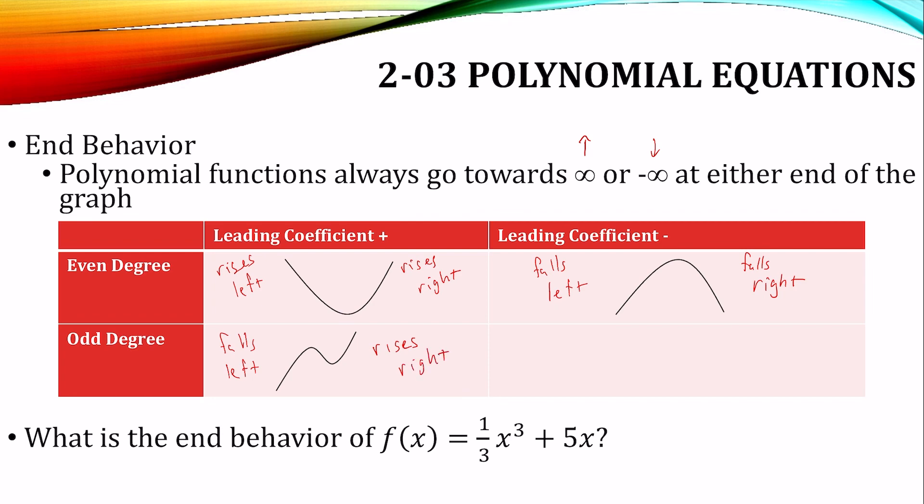And if the leading coefficient is negative, it's upside down, where it rises to the left and it falls to the right.